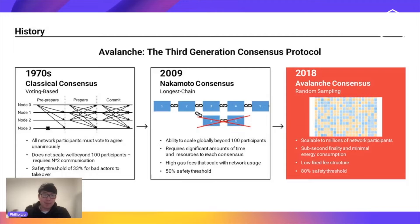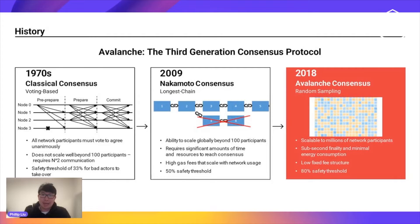Avalanche comes in as a best of both worlds between these two approaches. It functions similarly to classical consensus, but some of its security features are similar to Nakamoto's. That allows the network to have very high throughput, very low latency and confirmation times, and very low transaction fees. It can also scale to millions of nodes, making it one of the most decentralized protocols in existence today.